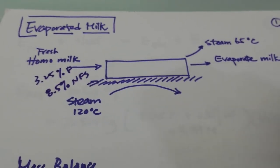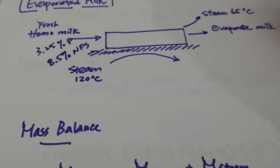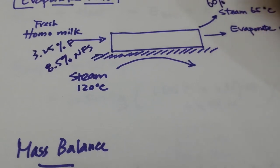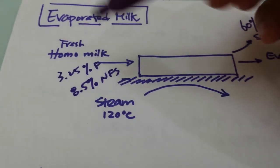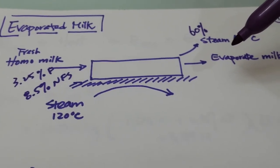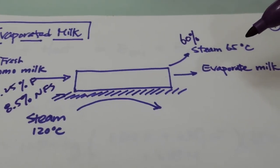During the process, 60 percent of the water from the milk will be removed in the form of steam. In our system here, we are keeping the steam at 65 degrees Celsius.